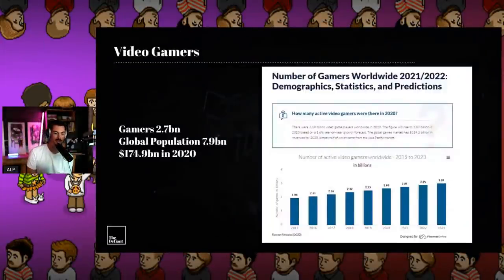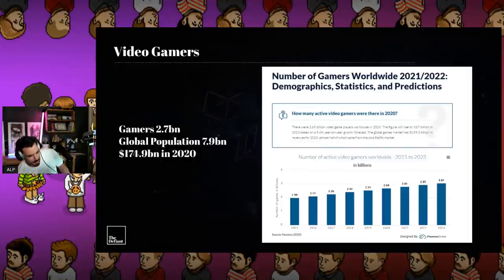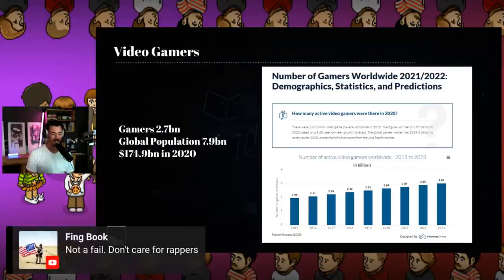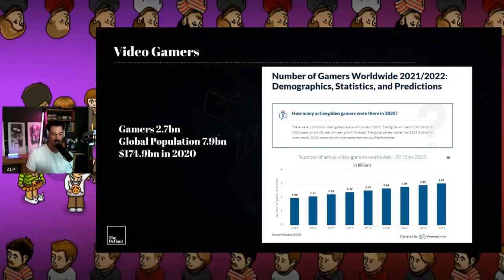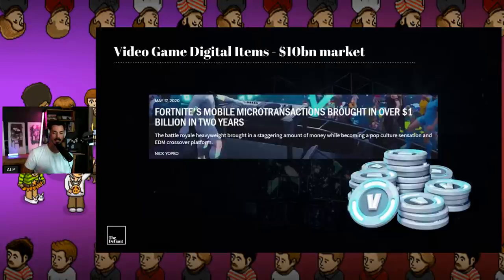Video gaming statistics are remarkable. Worldwide there are 2.7 billion gamers — the global population is only 7.9 billion, so that's roughly one in three people. Those gamers spent around 174.9 billion dollars in 2020. Fortnite's mobile microtransactions brought in over a billion dollars in two years using V-Bucks, and the overall market for video game digital items is 10 billion dollars. Absolutely staggering numbers.